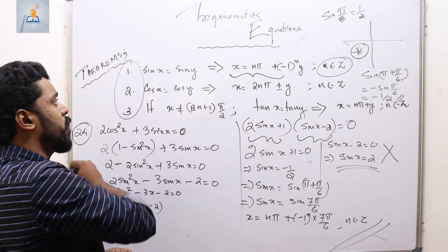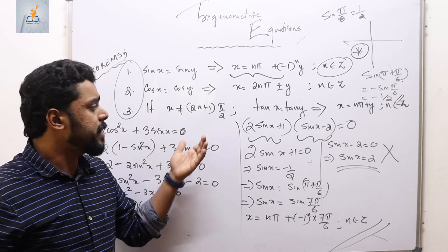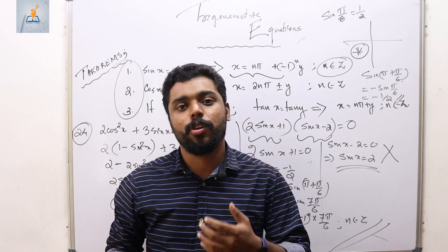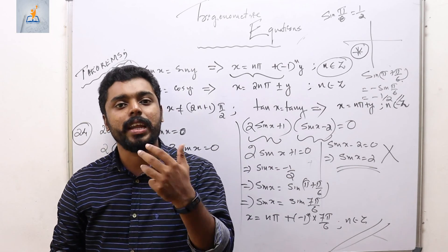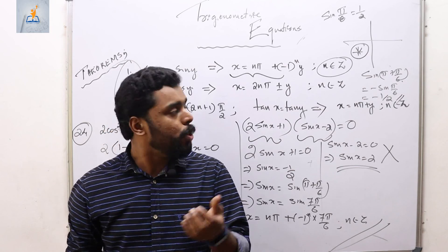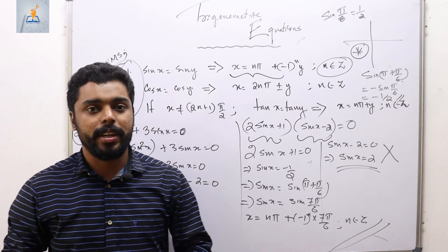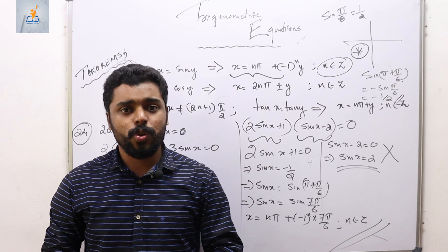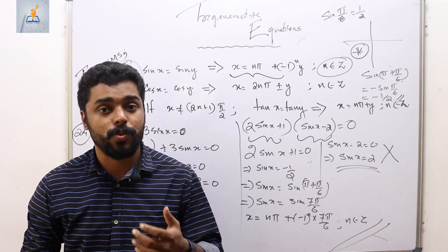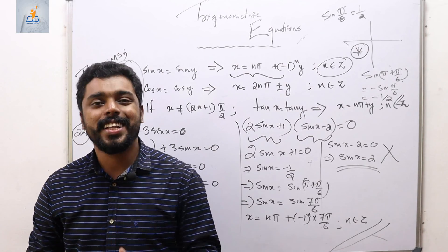Using these three important theorems, we can easily find the general solution of any trigonometric equation. I hope you understood the method of finding principal solutions and general solutions. In the next class we shall do the exercise questions from this session and begin new chapters. Wait for the next videos — till then, bye.